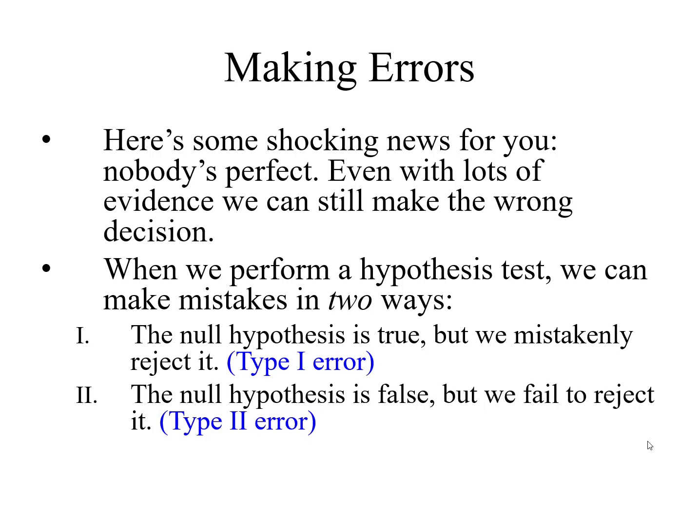When we perform a hypothesis test, we can make mistakes in two ways. The null hypothesis is true but we mistakenly reject it — just like in the jury example where the client is innocent but the jury says they are guilty. Or maybe the client is guilty but the jury, based on the evidence, says the client is innocent. So there are two types of error, which I have already discussed in previous lectures.